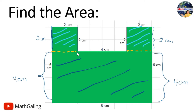Now let's find the areas of these polygons. The area of a square is side squared, or side times side. The side of this small square is two centimeters, so the area is two squared, which equals four centimeters squared.